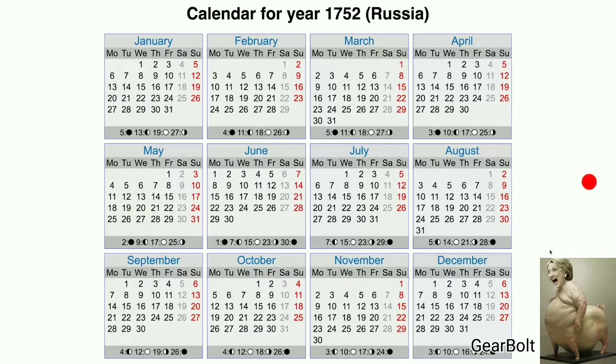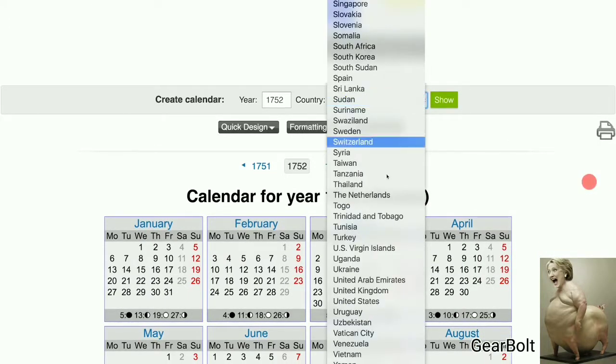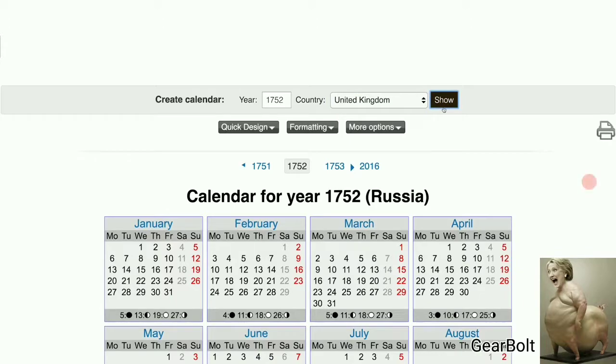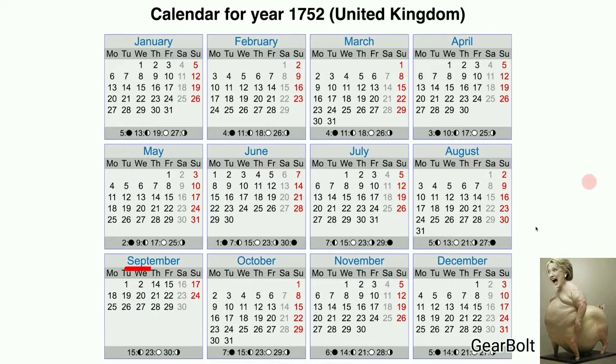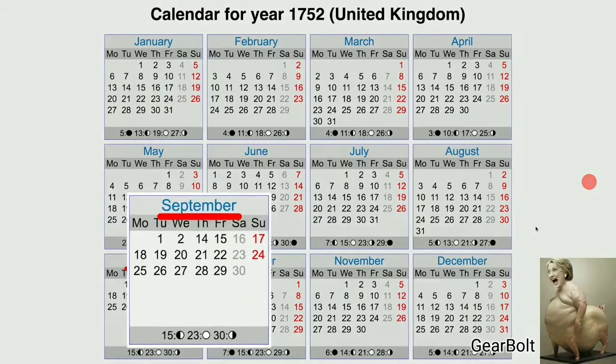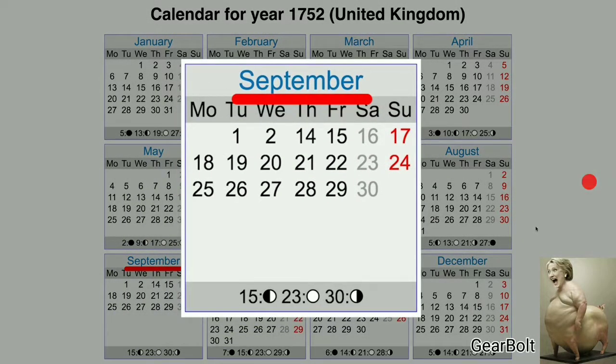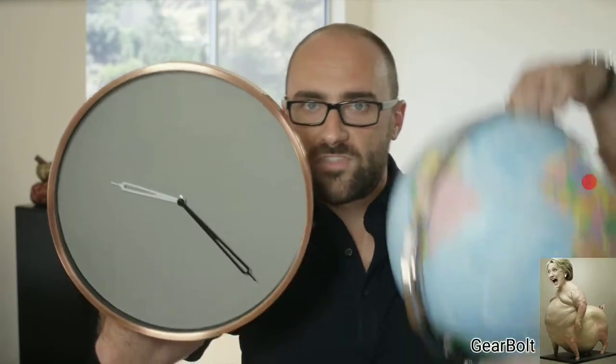In Russia, 1752 looked pretty normal, but check out what the British Empire was up to that year. Nothing really out of the ordinary, except September. The second was followed by the 14th? Were 11 days just deleted? Where'd they go? What happened then?